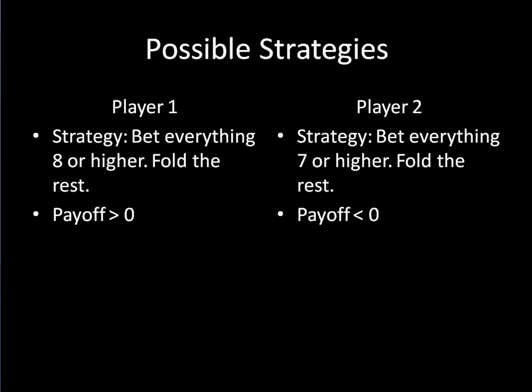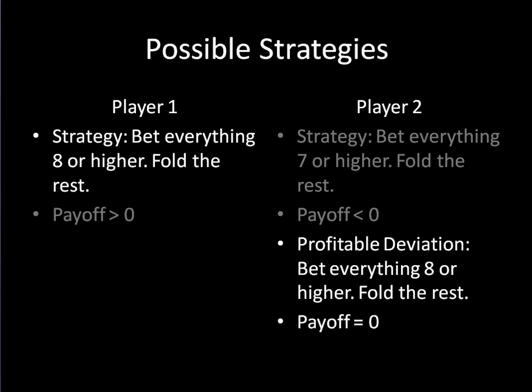Now let's consider what happens if player one bets everything eight or higher and folds the rest. Since this game is zero sum, player two must now be losing money on average. So you might be wondering why she doesn't just match player one's strategy — and you're right, she could. That would make her payoff zero on average, which is better than some negative number. But why not just bet everything nine or higher instead? Now whenever player one has an eight, player two will win, and they will split the rest of their hands on average. This means player two can now expect a positive payoff overall.